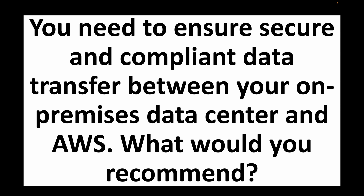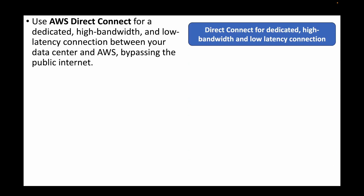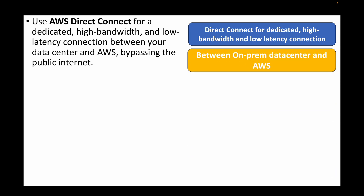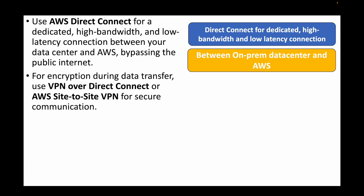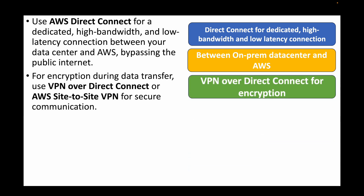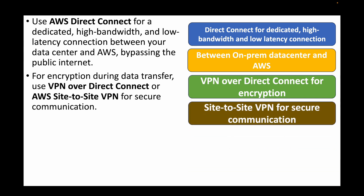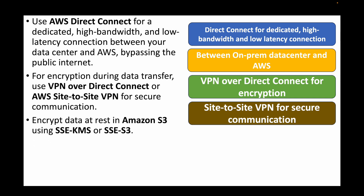The next question is: you need to ensure secure and compliant data transfer between your on-premises data center and AWS — what would you recommend? We can use AWS Direct Connect, which provides a dedicated high-bandwidth, low-latency connection between your on-premises data center and AWS without using the public internet. For encryption during data transfer, we can use VPN or Direct Connect, and also AWS Site-to-Site VPN for secure communication.